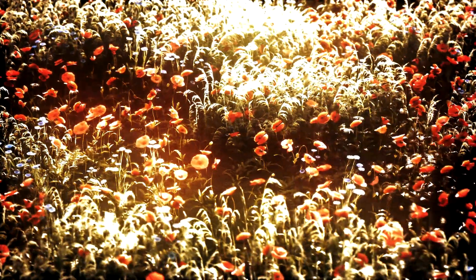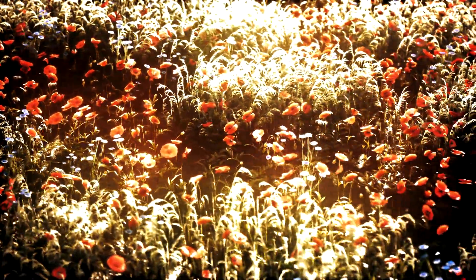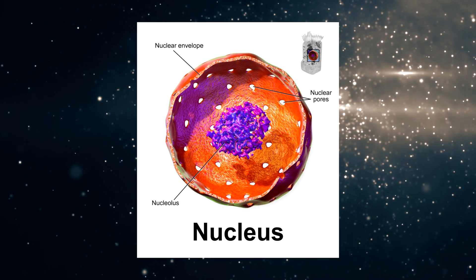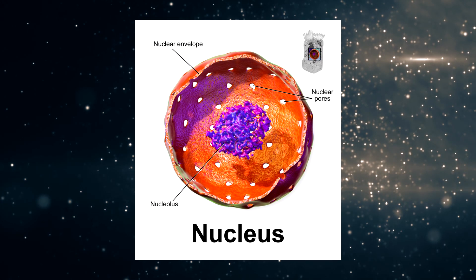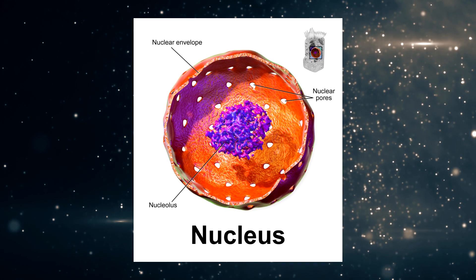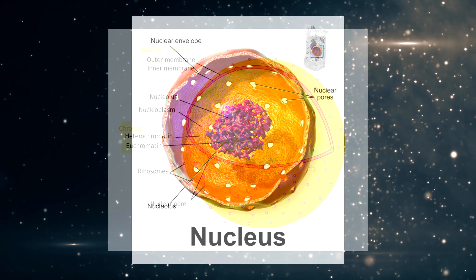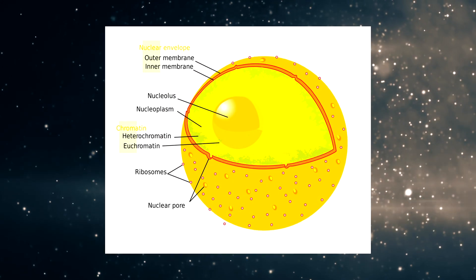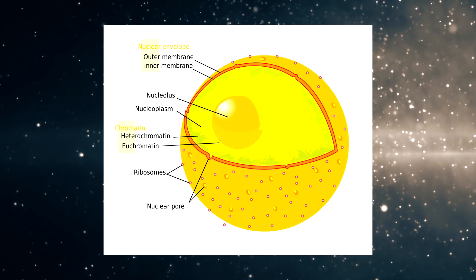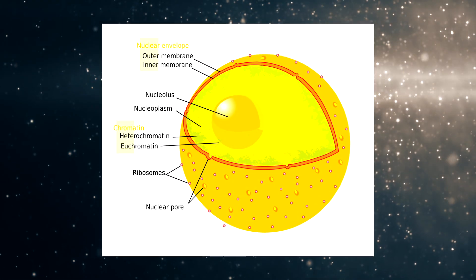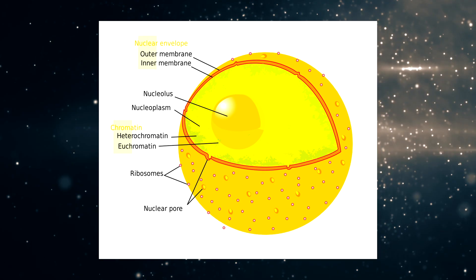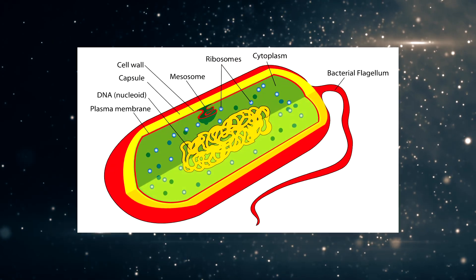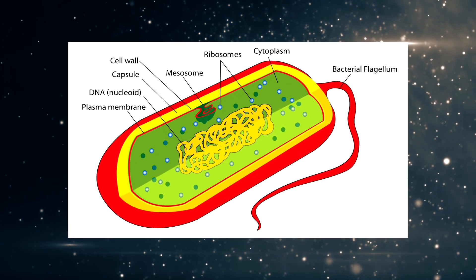But at the same time, spirulina doesn't have a nucleus — which is the part of an organism that contains the chromosomes, encapsulated in a little membrane — and that makes it a prokaryote.